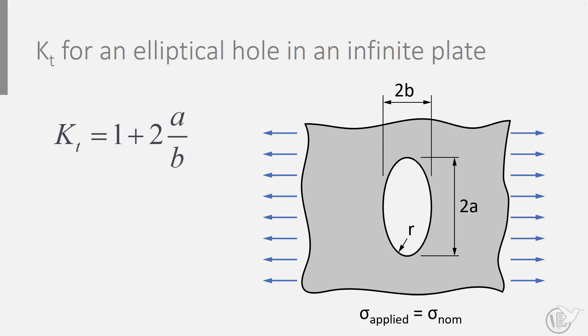It illustrates how Kt depends on the major and minor axes of the ellipse. Or after rewriting, it illustrates how Kt depends on the major axes of the ellipse and the radius right at the notch root. The smaller the notch radius, the higher Kt.